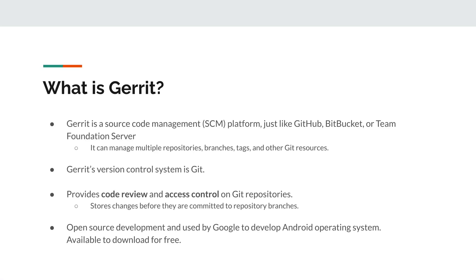Gerrit is a source code management platform just like GitHub, Bitbucket, or Team Foundation Server. Just like any source code management platform, it can manage multiple repositories and Git resources for multiple projects or teams. Gerrit's version control system is Git. Gerrit provides an optional code review workflow that stores changes before they are committed to the repository, and it provides access control for Gerrit projects and repositories.